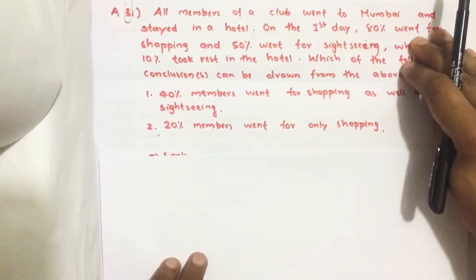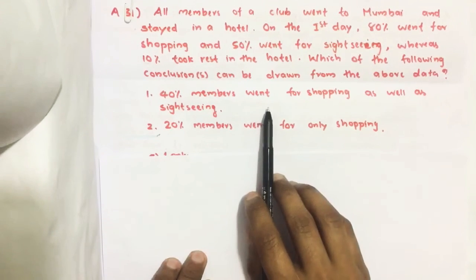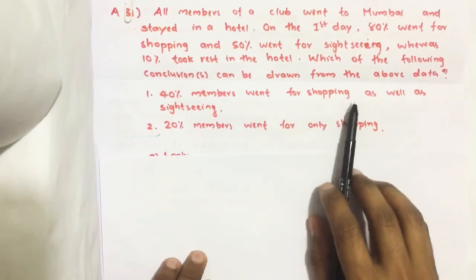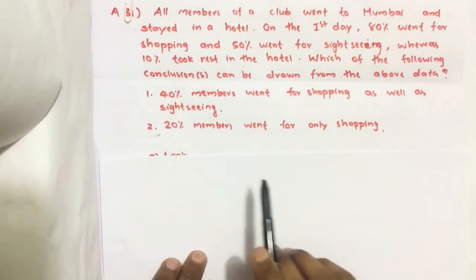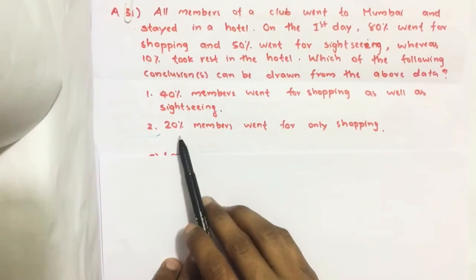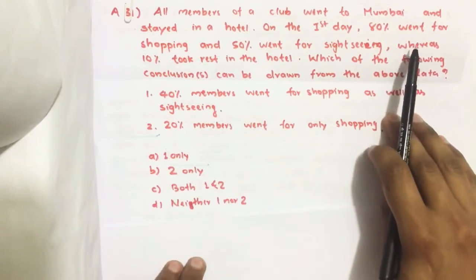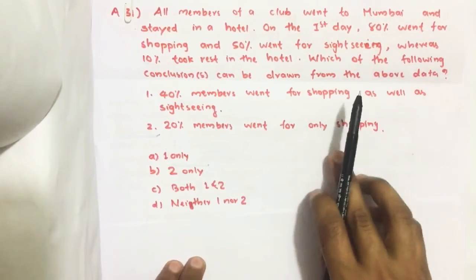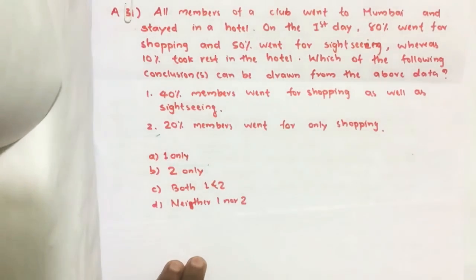The first option is: 40% of members went for shopping as well as sightseeing. The second statement is: 20% of members went for only shopping.